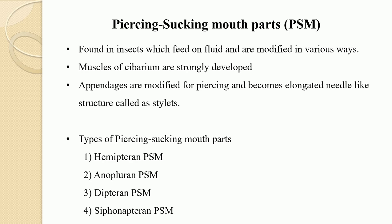In Hemiptera and many Diptera which feed on fluid within the plant and animal, some components of the mouthparts are modified for piercing and they are elongated needle-like structures referred to as stylets. The outer tube is formed by the labium, and the labium does not take part in any kind of the piercing mechanism but simply serves as a protective covering for the others. The mandibles and maxillae are the major components, though sometimes they are supplemented or replaced by the labrum, epipharynx, and hypopharynx. They are greatly elongated and slender structures like a needle, mainly piercing the skin of the animal or the epidermis of the plant.